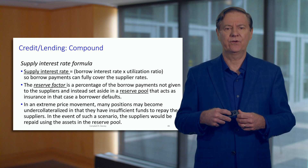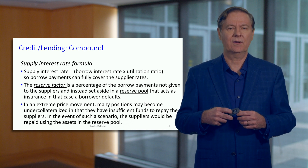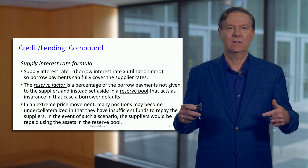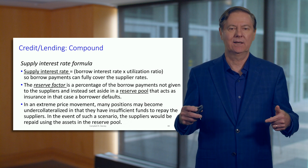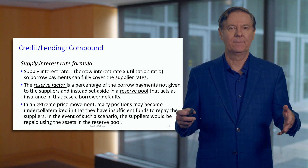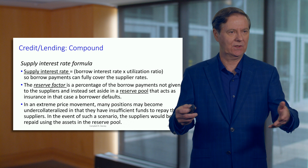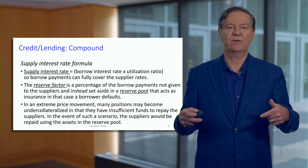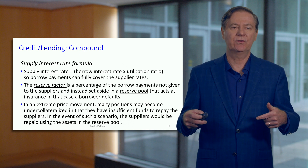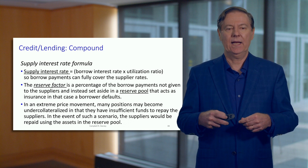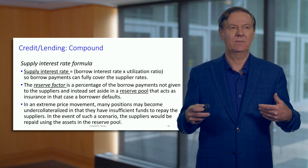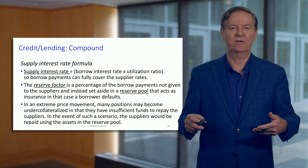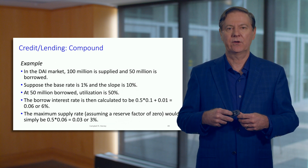There's also something important called a reserve factor — an amount of revenue from borrowers that's set aside as a reserve, so suppliers don't receive that portion. This reserve pool is important because there could be a situation like with MakerDAO where there's a default, i.e., under-collateralization, and this reserve pool is used to cover that risk.